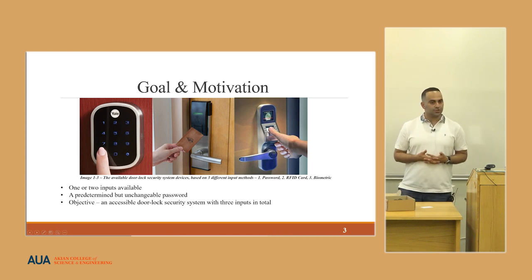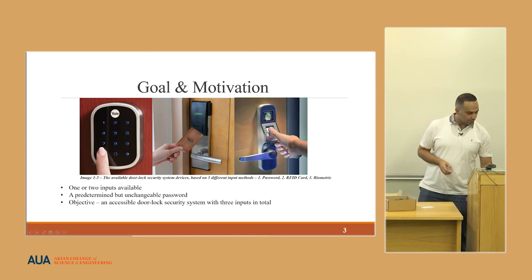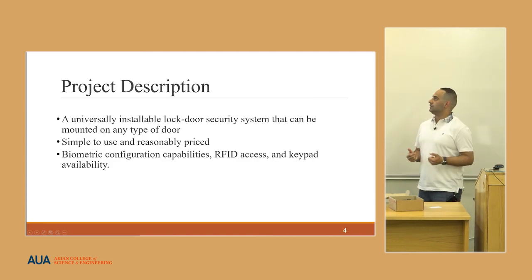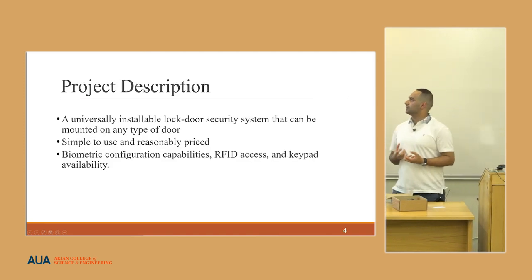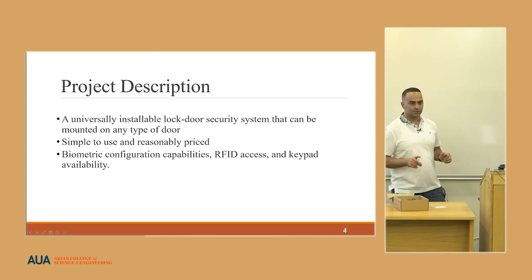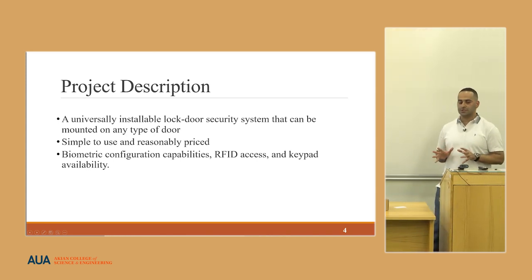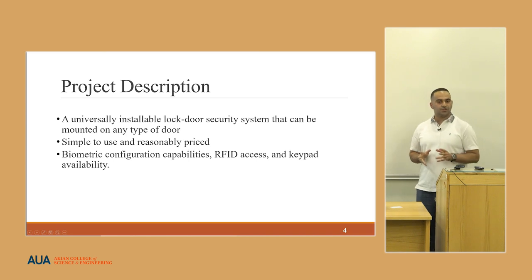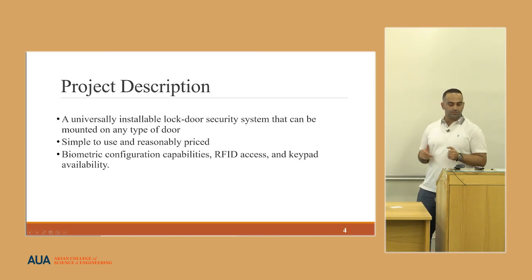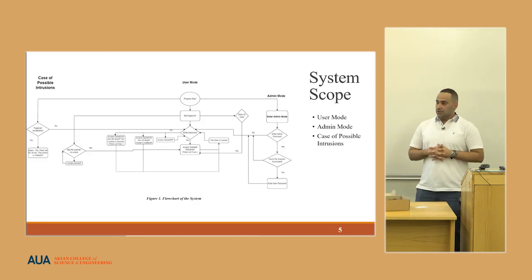The goal of this project is to create an accessible door lock security system with three inputs in total. My project is a universally installable door lock security system which can be mounted on any door. It's simple to use and reasonably priced. It has biometric configuration capabilities, RFID access, and keypad availability.